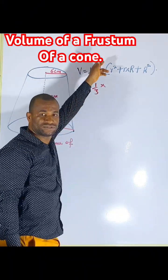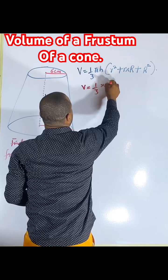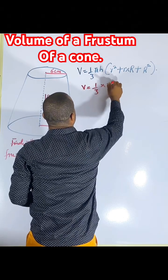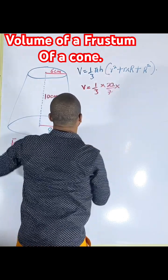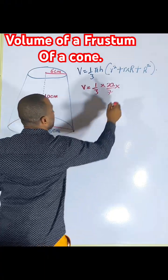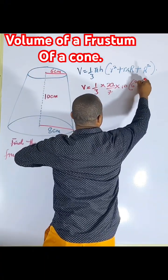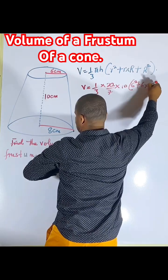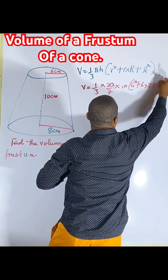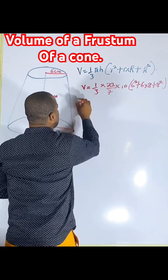of course π is 22 over 7. I have 22 over 7 times the height, which is 10, brackets: r is 6 squared plus 6 times 8 plus 8 squared. Now I'm having V is equal to...